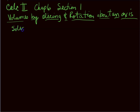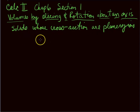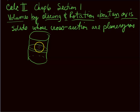We're talking about solids whose cross-sections are plane regions. For example, if we take a cylinder and slice it right in the middle, we get a plane region which is a circle.